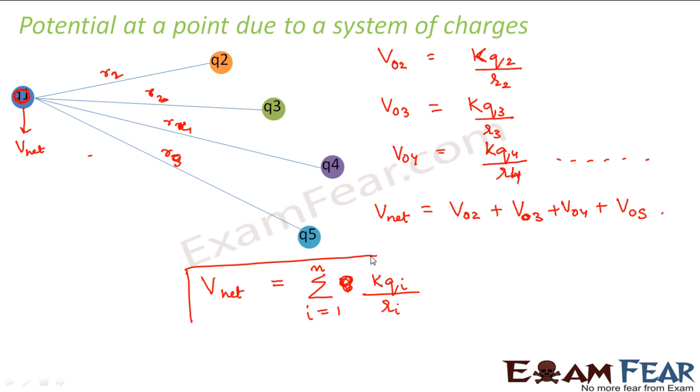So whenever you have multiple charges forming a system, then the potential due to the multiple charges is equal to the sum of the potentials due to each individual charge. So that is how you calculate the potential.